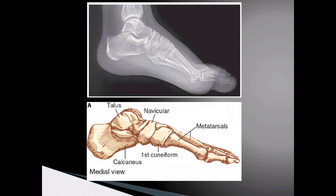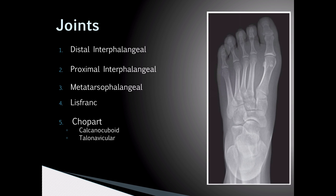Now we can compare the lateral view of the bony foot to its associated x-ray. Again, we see that the forefoot is made up of the metatarsals and phalanges. The midfoot is made up of the navicular bone, cuneiforms, and cuboid, which is not visualized on this film. And the hindfoot, which is made up of the talus and the calcaneus. In this view, you can see that the talus is a major component of the ankle joint.